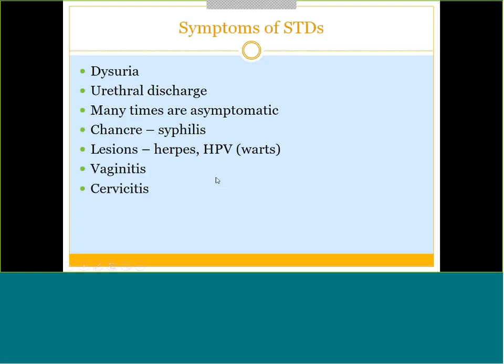Symptoms of STDs include dysuria and discharge, but many cases — especially in men — are asymptomatic, which is concerning for transmission. Syphilis and Haemophilus ducreyi both present with a chancre, a lesion on the genital area. Other lesion types include herpes vesicles and papillomavirus warts — these are distinct from the chancre.